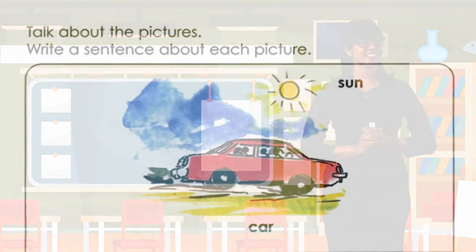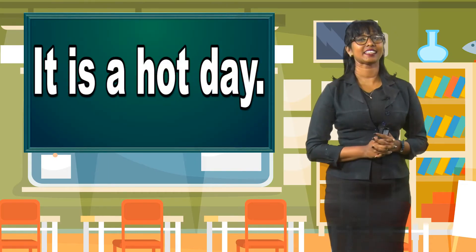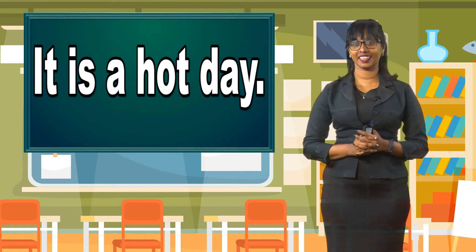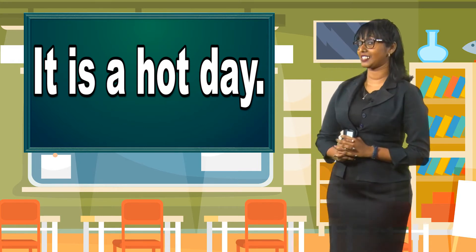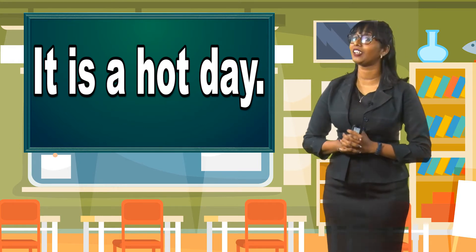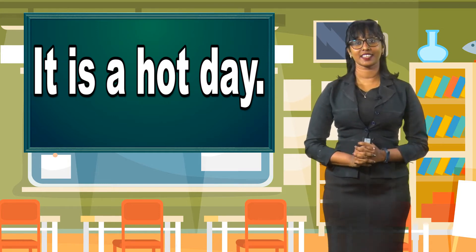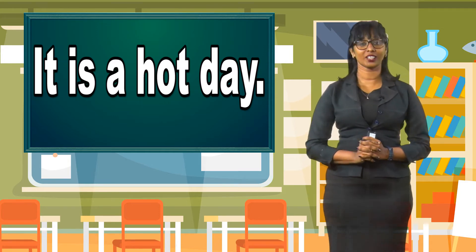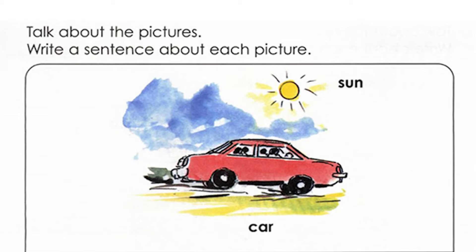What else can we write about the picture? We can say, it is a hot day. Whenever the sun is out, usually the place is very hot. So we can say, it is a hot day. There you go, boys and girls — we have three beautiful sentences about this picture.